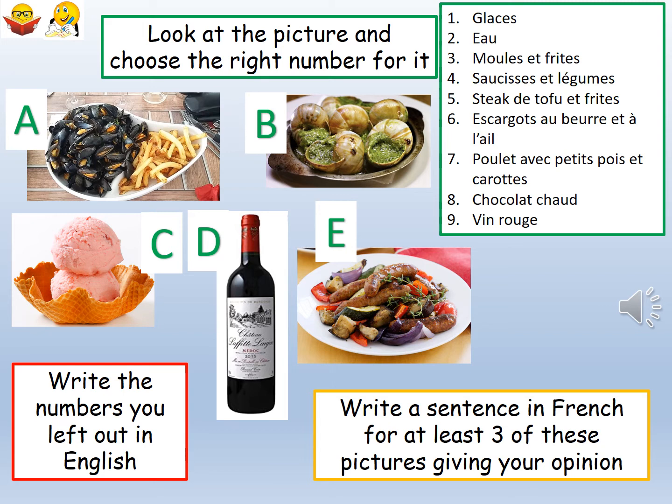And finally, out of the nine numbers from the green box, you will have used five of them. So there are four that you have not used yet. I would like you to translate into English the four that you haven't used. Pause the video, do the task and come back to the video.